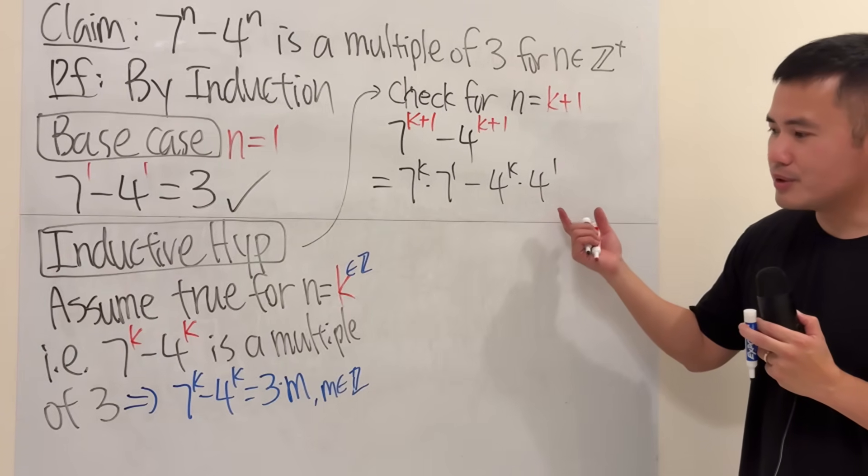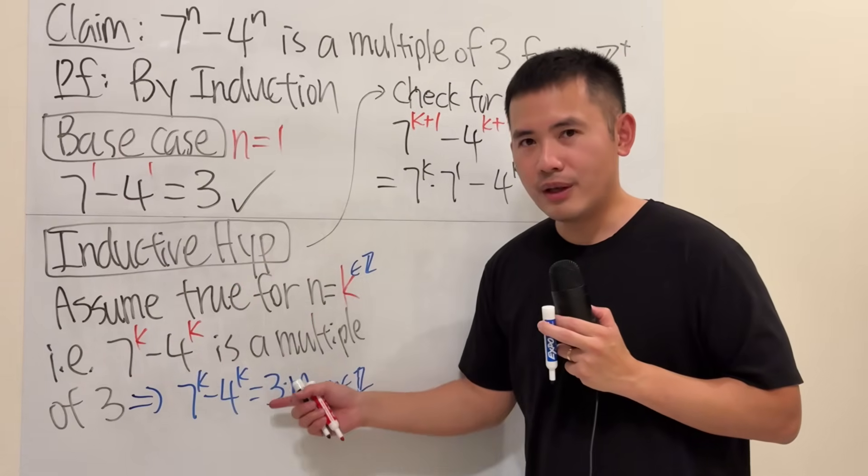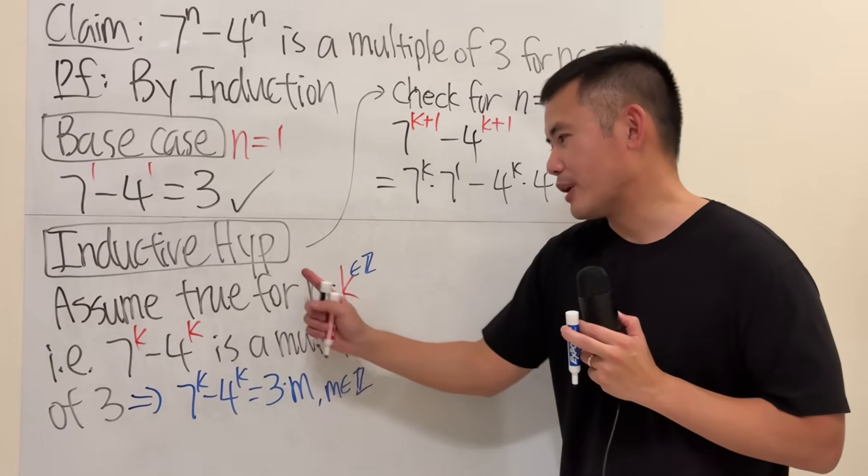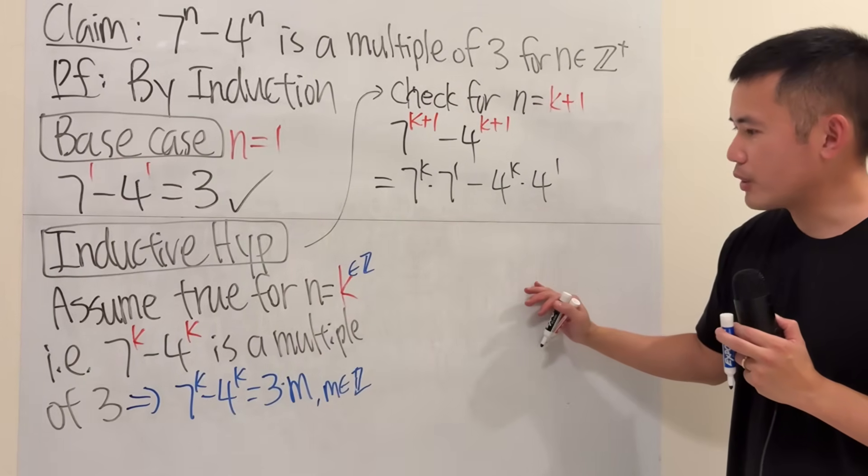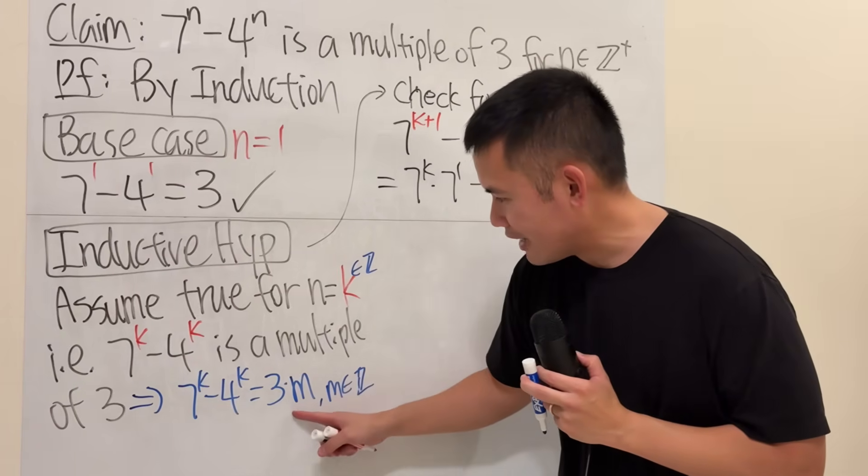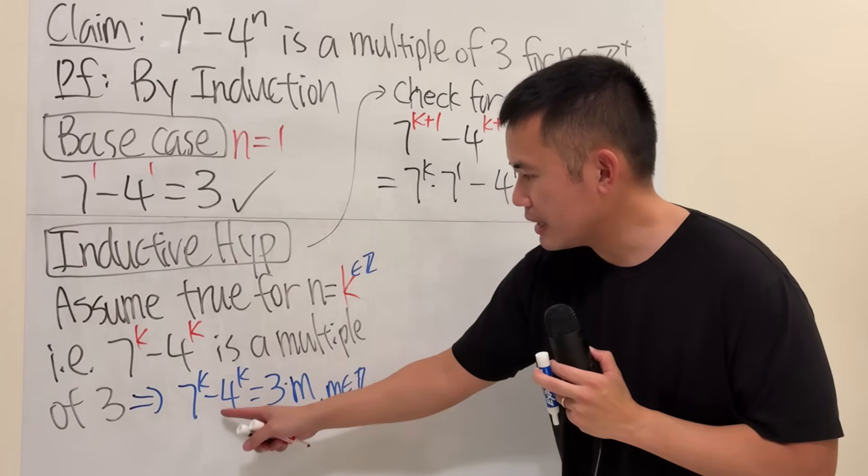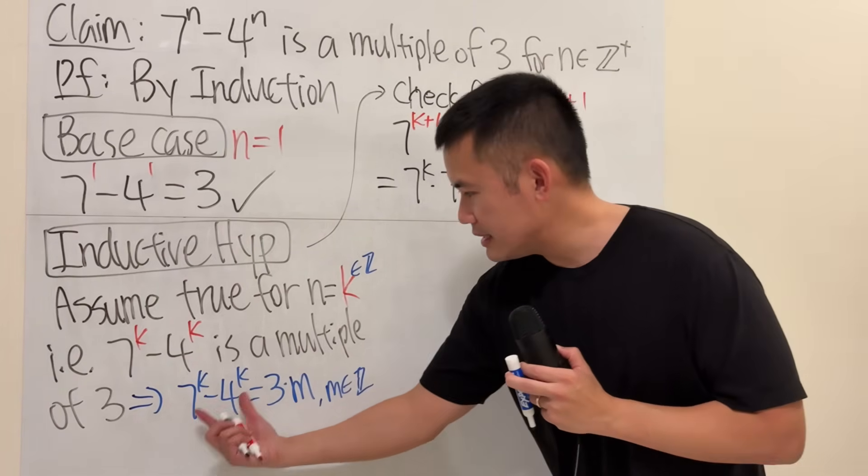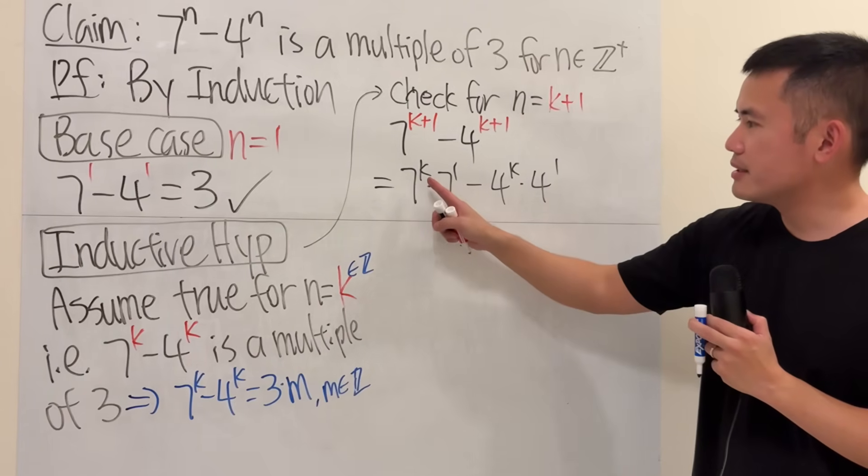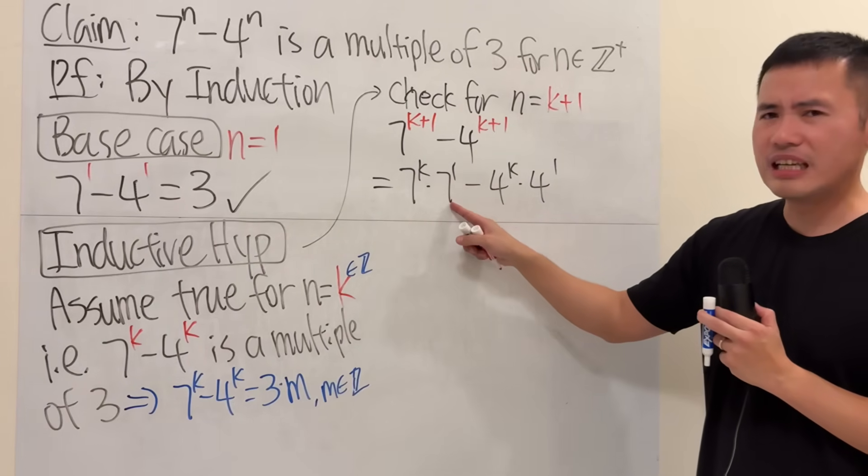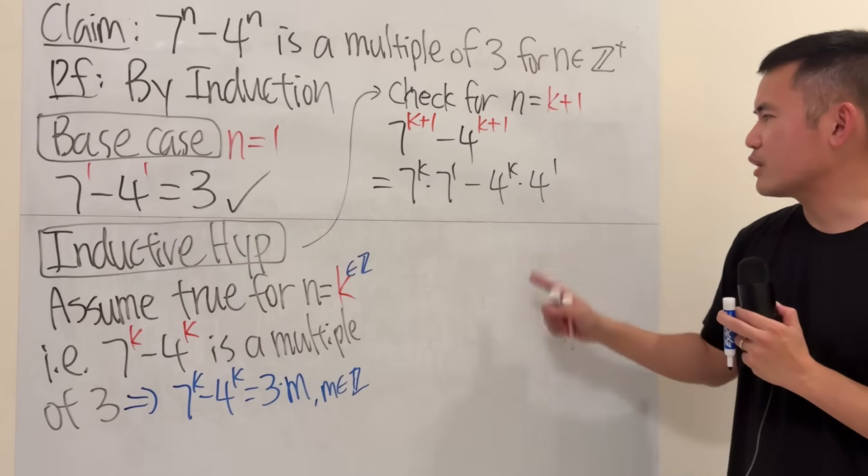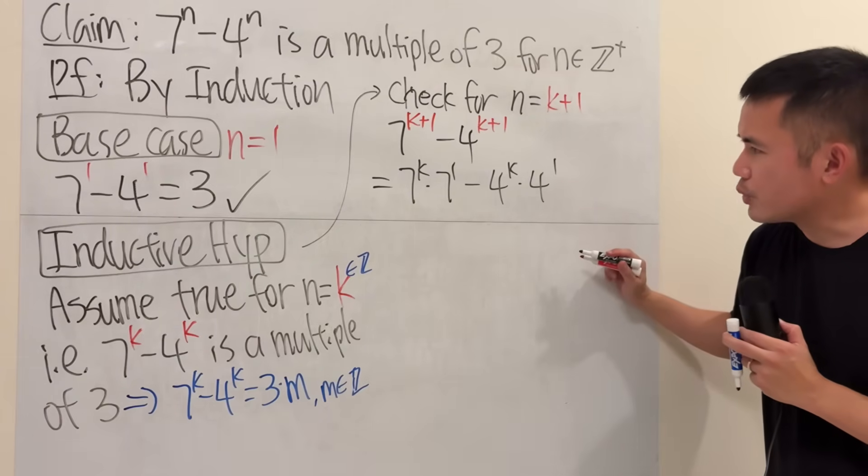When you are getting stuck, just look back to what we have. Remember, if you don't use this right here, the proof is wrong. So this is what we have. 7 to the k minus 4 to the k is a multiple of 3. So I must see this, but I don't have that, because this is 7 to the k times 7. We don't like the 7. Likewise, we don't like the 4. So what can we do?